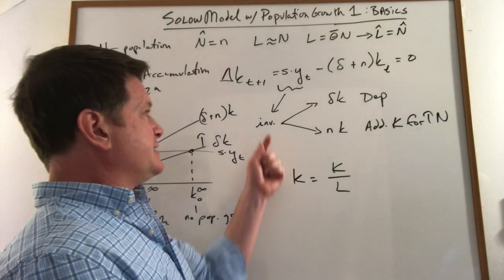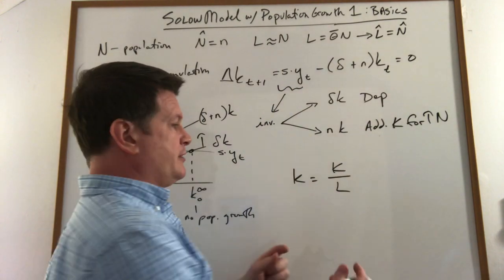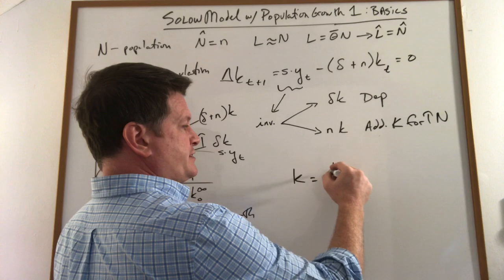What's going on? Yes you have to have additional output. You're going to have additional workers so you're going to have additional output. So you're going to produce additional capital.